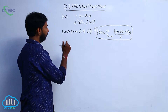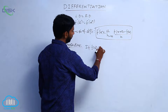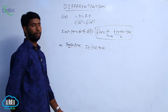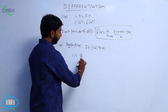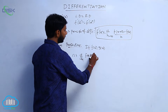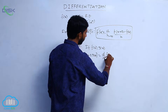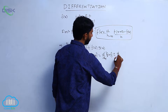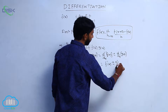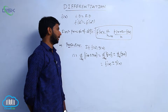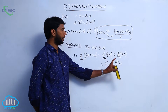Next, properties: if f of x and g of x are two differentiable functions, then d by d x of f of x plus or minus g of x is equal to d by d x of f of x, plus or minus d by d x of g of x. It can be written as f dash x plus or minus g dash x, where f dash x represents the derivative of f of x with respect to x, and g dash x represents the derivative of g of x with respect to x.